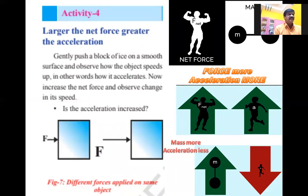If you take a smooth, frictionless surface and take an ice cube and gently push it with some force F, the ice cube moves with some velocity. The ice cube accelerates — the rate of change of velocity is known as acceleration. Initially the ice cube is in the rest position. While applying the force, it moves and changes velocity over a time period.